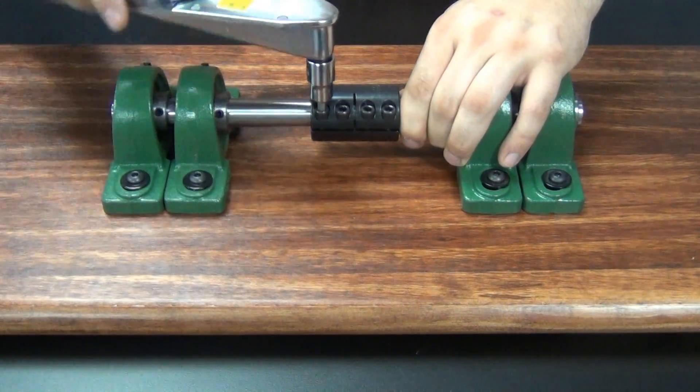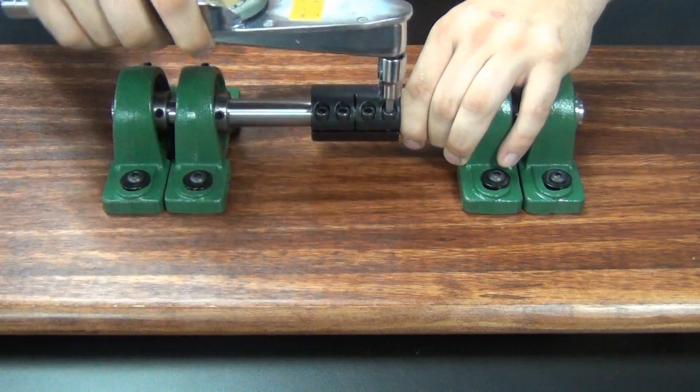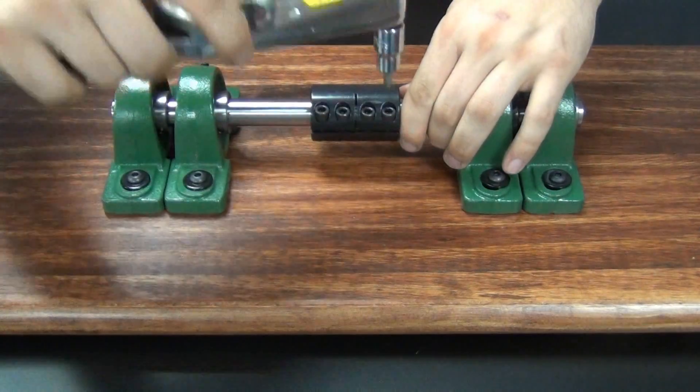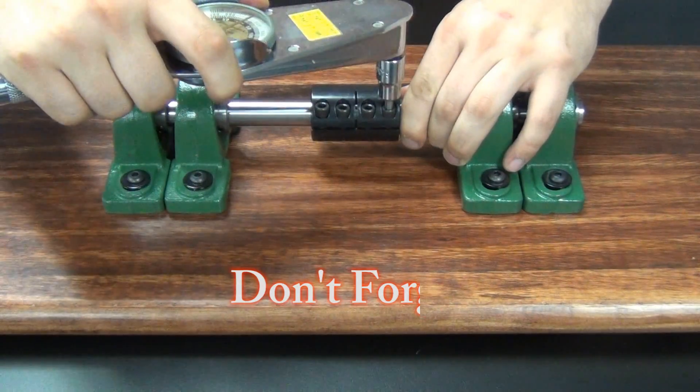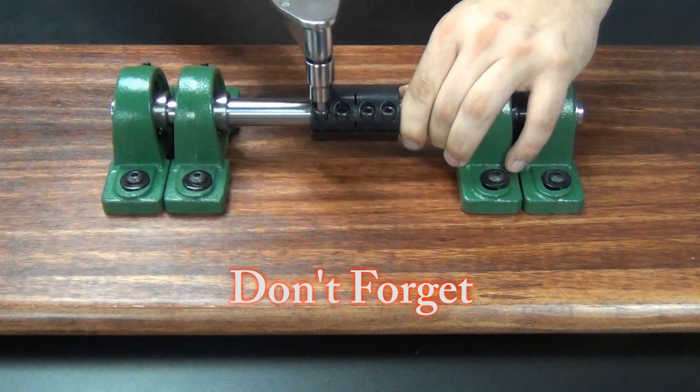Repeat for the outside screws, again tightening to half of the recommended seating torque. It is important to maintain the gap between the two halves on the two piece couplings.